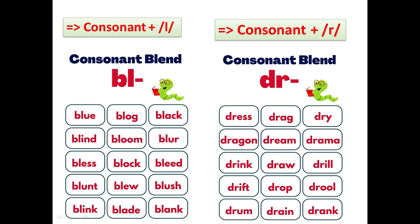Now the consonant blend of D-R. The sound of D is /d/ and the sound of R is /r/. Each gives a separate, distinct sound.